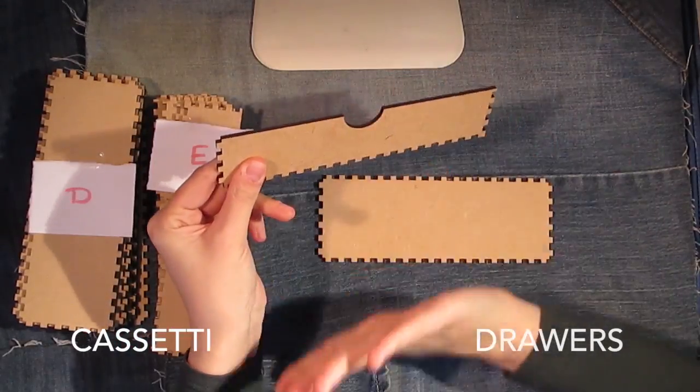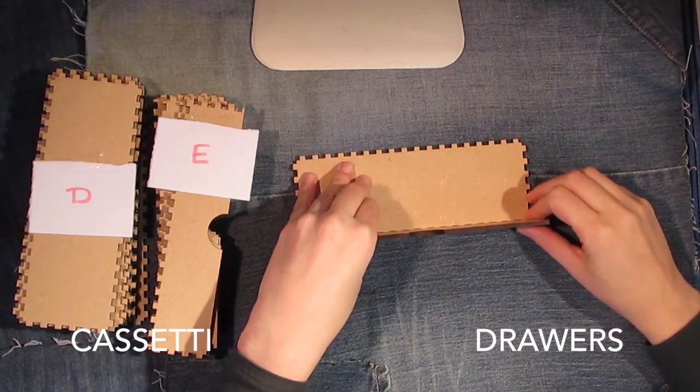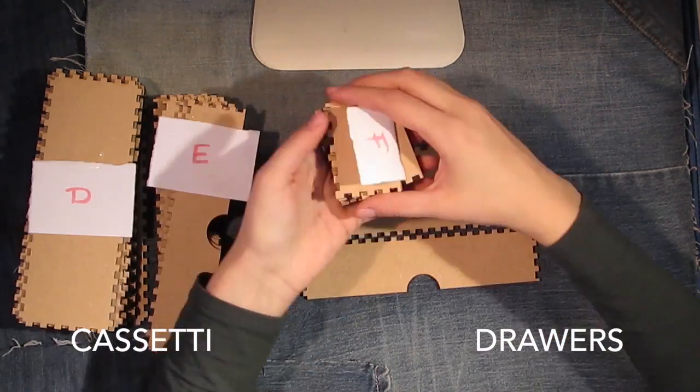On each base you will add a panel E which is very simple to identify because it has a sort of hole.